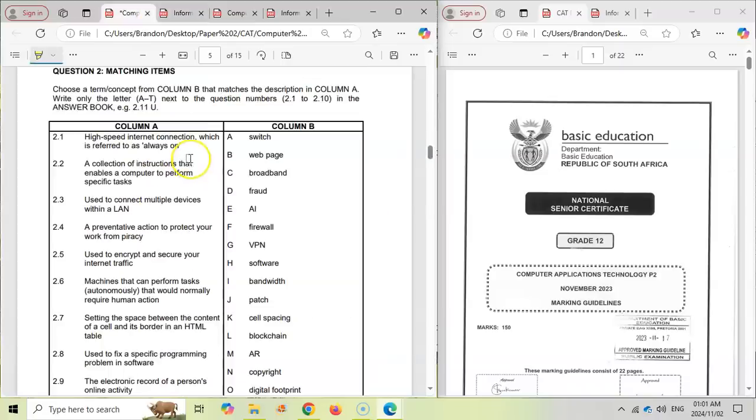Then in the CAT paper you'll also get a matching terms question where you're going to read this question and find which of these options best fits that scenario. Now, there's always one answer for one option. There's never a duplicate in this case. You'll never use the same letter for multiple questions.